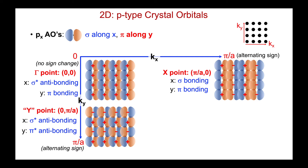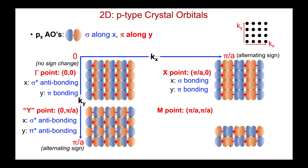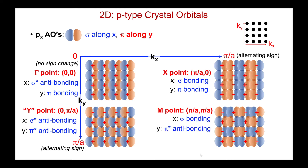Finally, let's go to kx = π/a, ky = π/a — our m point. kx = π/a means I'm changing signs: plus, minus, plus, minus, and the same along y, flipping each time. Looking at the bonding interactions: along x, kx = π/a gives sigma bonding interactions — everybody's interacting in phase. But at ky = π/a, the pi bonding is out of phase — anti-bonding between every single neighbor.